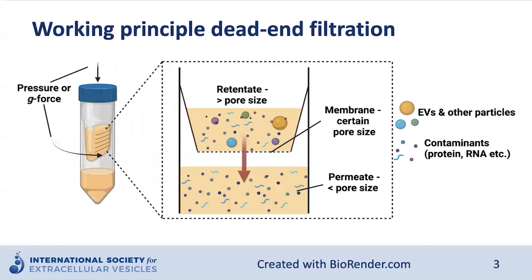Here you can see a schematic figure of dead-end filtration. It works by forcing the sample liquid and the molecules in the liquid through a membrane by applying a force, which commonly is pressure or G-force generated by centrifugation. The size of the molecules that can pass through the membrane is decided by the pore size of the filter used. Filters with many different pore sizes exist, and for EV isolation, 10 KDA membranes all the way up to 1,000 KDA membranes have been used. The material left in the filter is called a retentate, which commonly contains your EVs. The material going through the filter is called a flow-through, filtrate, or permeate, and is commonly the waste material when performing EV isolation with dead-end filtration.